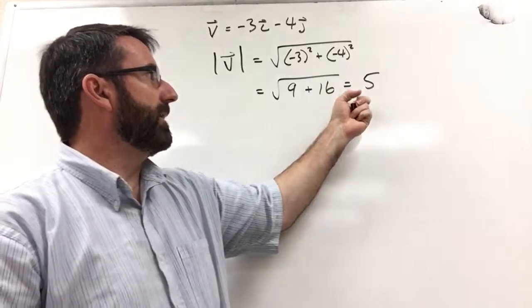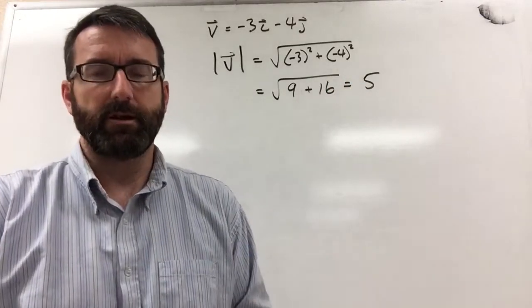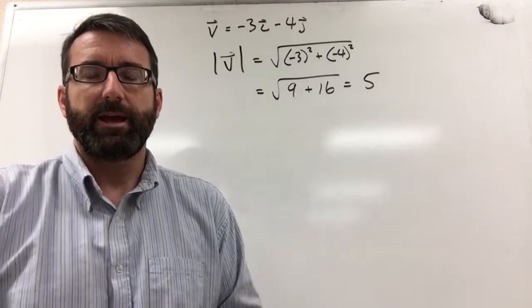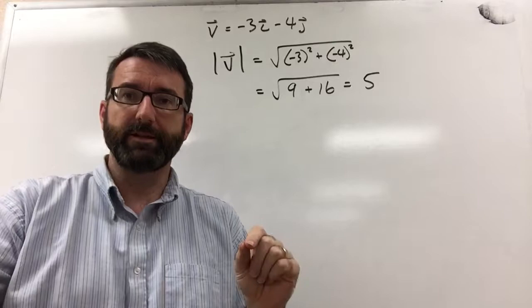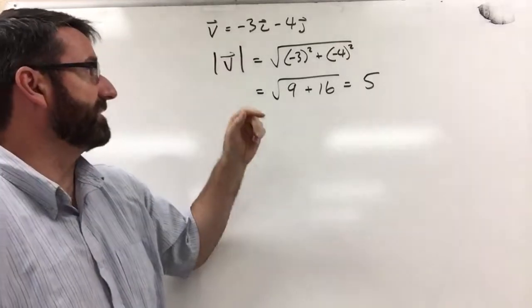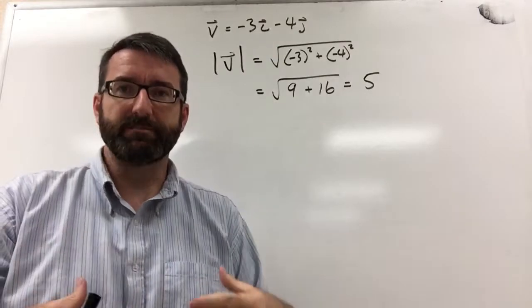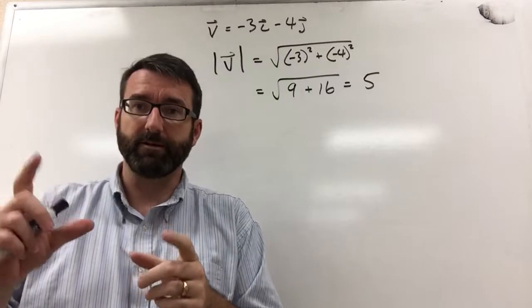All right, so now we need to find the direction of the vector. And now remember, a vector has both a length or magnitude and a direction. If you take this vector and divide it by its magnitude, what you're going to be left with is just the direction. It's going to be a unit vector.